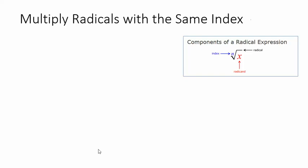In this video we're going to look at multiplying radicals that have the same index. Remember the components of a radical expression: the radical itself, which is this checkmark sign, the index, which is a little number tucked in here in the upper left, and the radicand, which is whatever is underneath the radical sign.